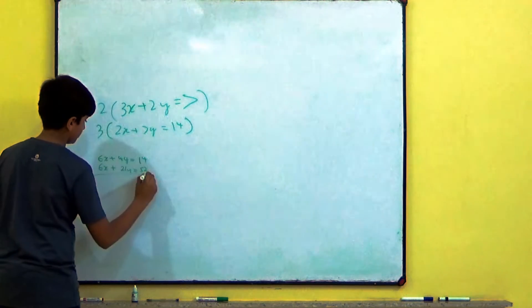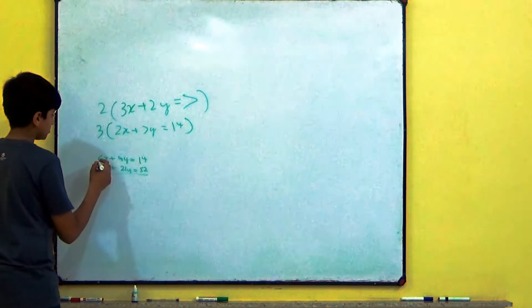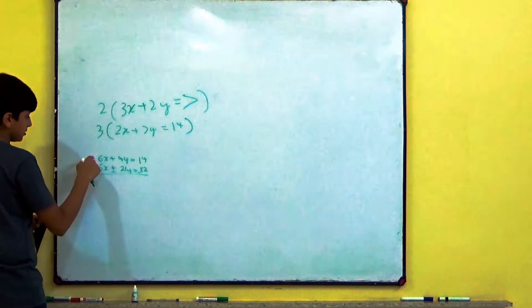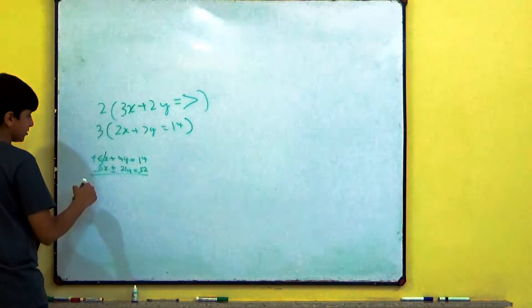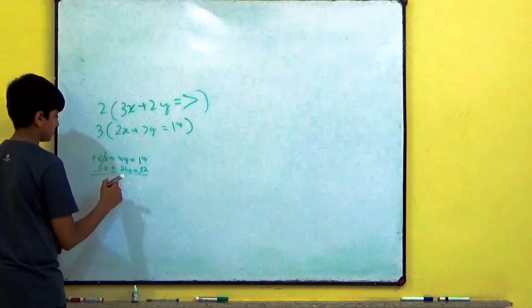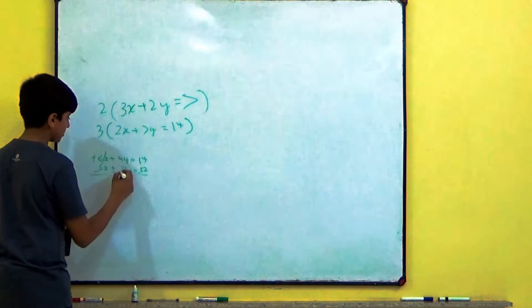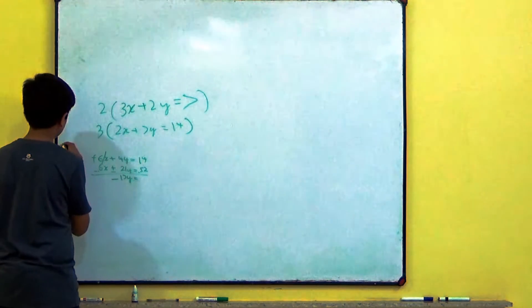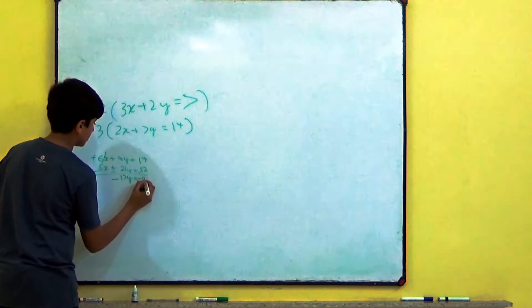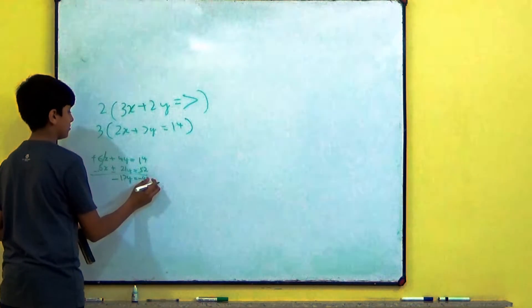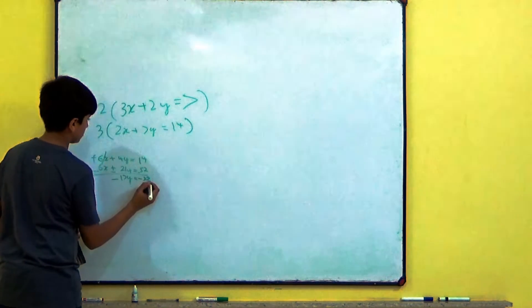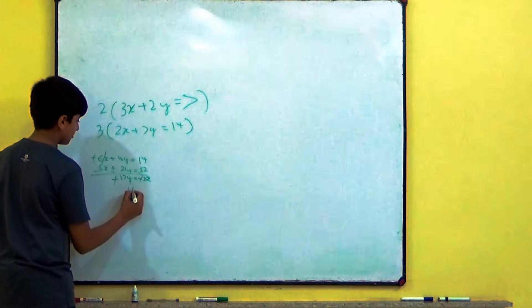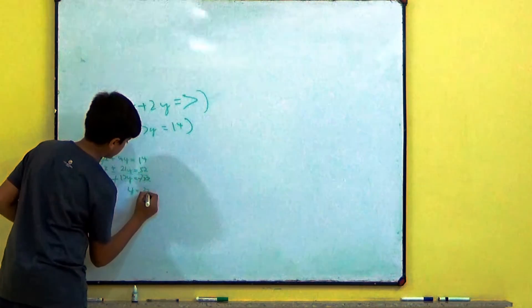Here will be 6X plus 21Y is equal to 52. So, we will equate these equations. The sign this will be minus, this will also be minus and this will be minus. When this has a sign plus and this has a sign minus, they will get cut. So this has a sign minus. 21 minus 4 is equal to 17Y. 52 minus 14 is equal to 42. Minus 42, minus 32. So, this will get cut. Minus minus will get cut. Y we get 32 upon 17.